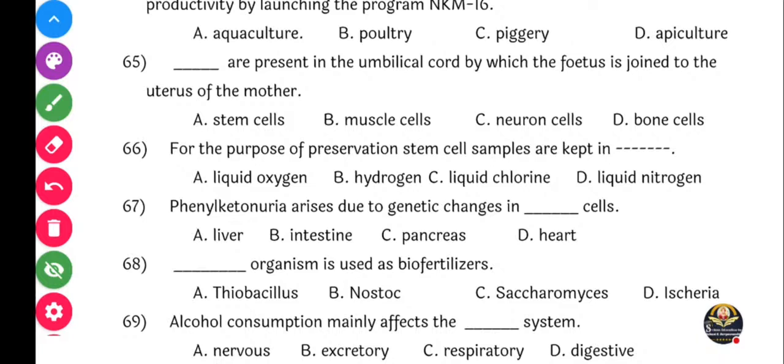Question 66: For the purpose of preservation, stem cells samples are kept in dash. Options: Liquid oxygen, hydrogen, liquid chlorine, or liquid nitrogen. Stem cells are preservation karna shri chithe samples theo lele ashtat - liquid nitrogen madhe. Yes, liquid nitrogen is the right answer, option D.